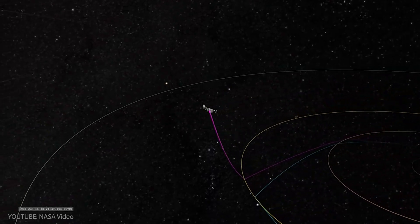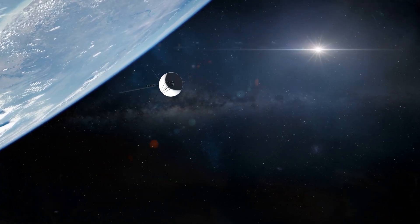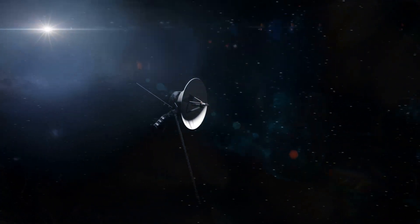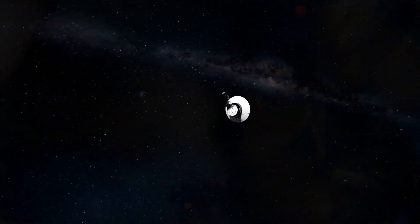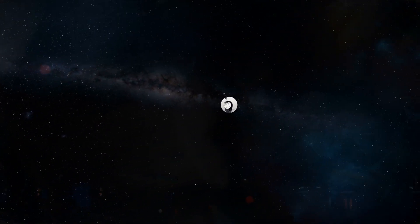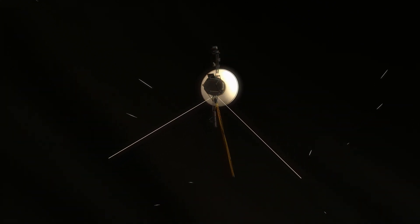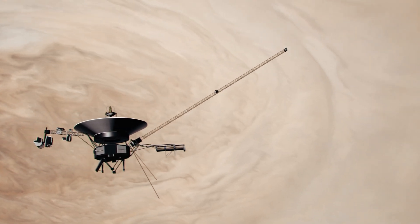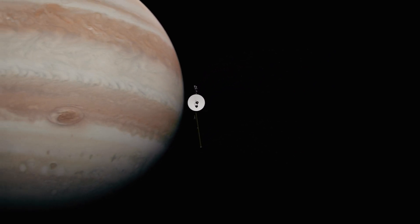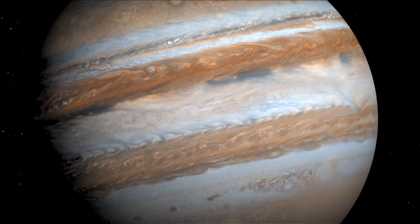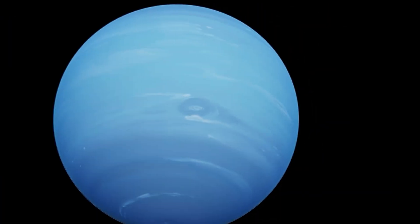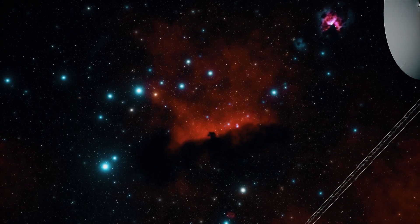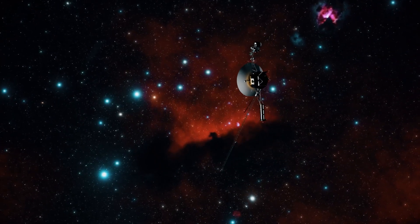At the same time, the probes set some unique records. Voyager 1 set a record as the fastest-moving controlled object propelling away from Earth. Nothing ever left us quite so fast. It is also the furthest removed object created by humans. Voyager 2 has something up its sleeve too. It is the first and only probe so far to have visited all four giants of the solar system: Jupiter, Saturn, Uranus, and Neptune.